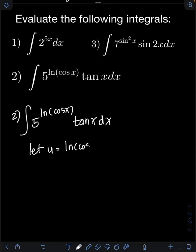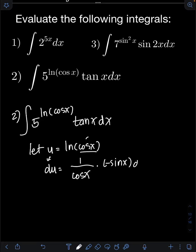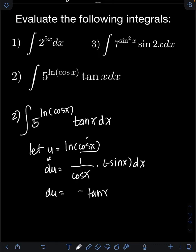Getting the derivative of both sides: the derivative of ln cos x is 1 over cosine x, then by chain rule we multiply by the derivative of cosine x, which is negative sine x, then dx. Applying the trigonometric identity, negative sine x over cosine x equals negative tangent x, so du equals negative tangent x dx.